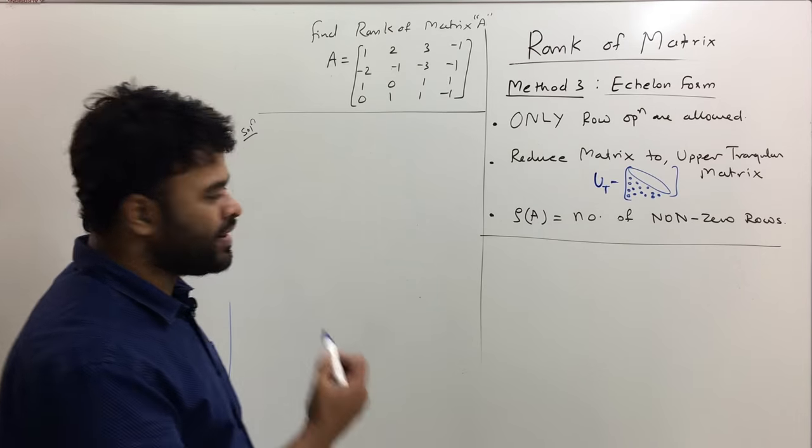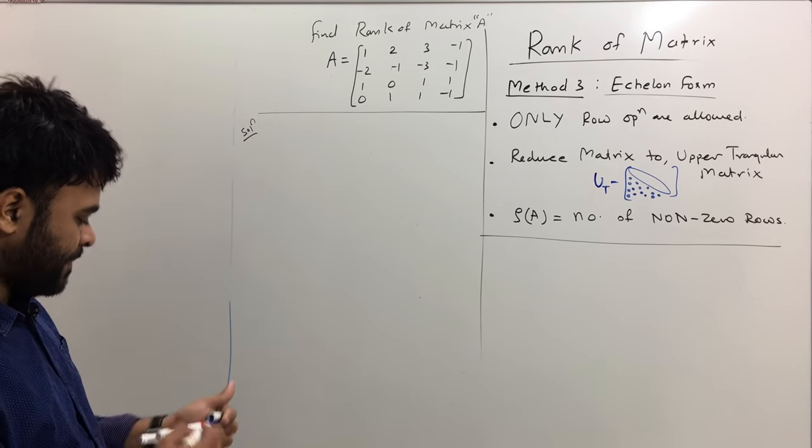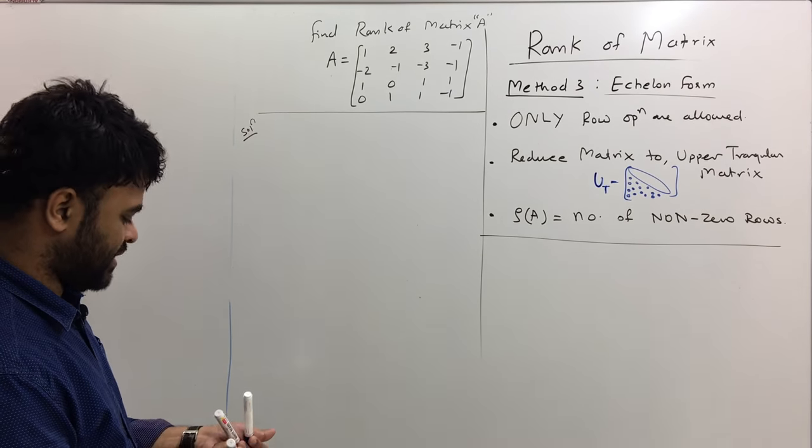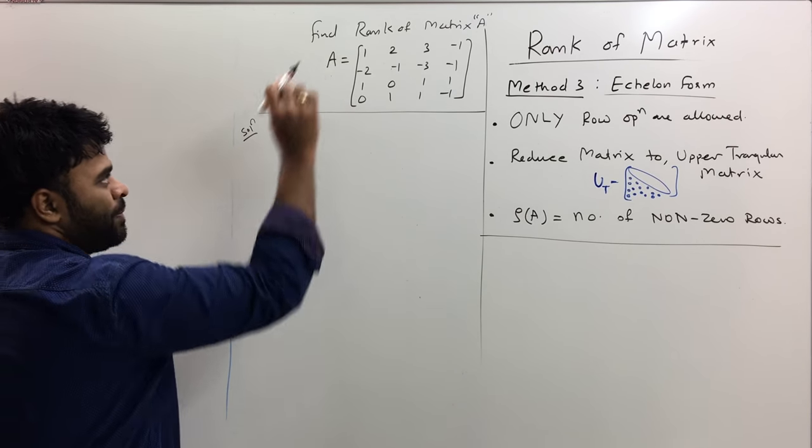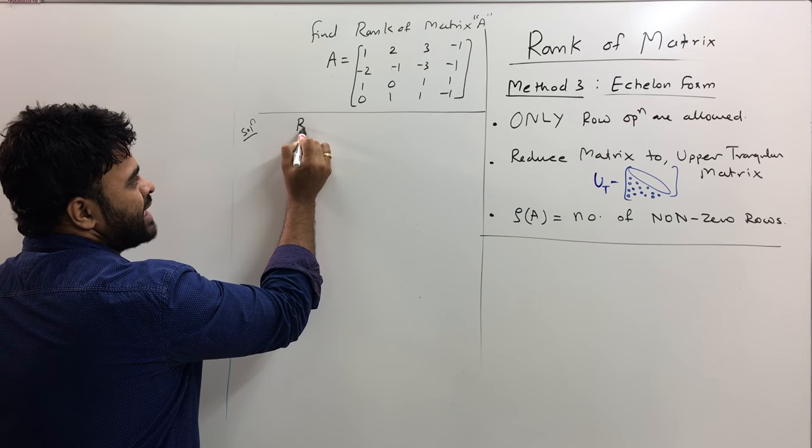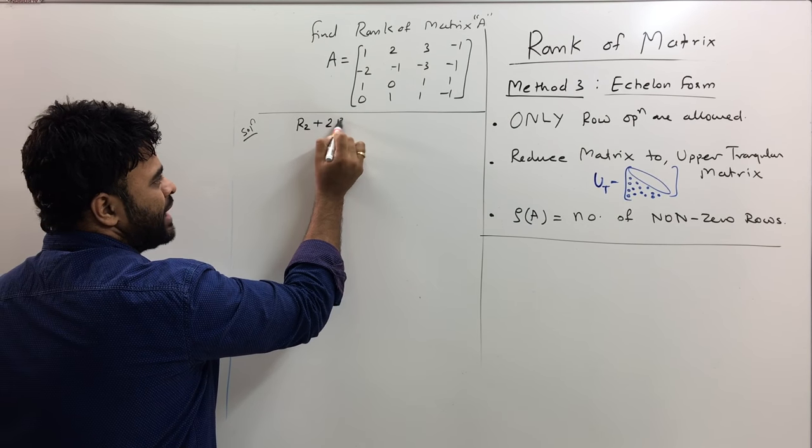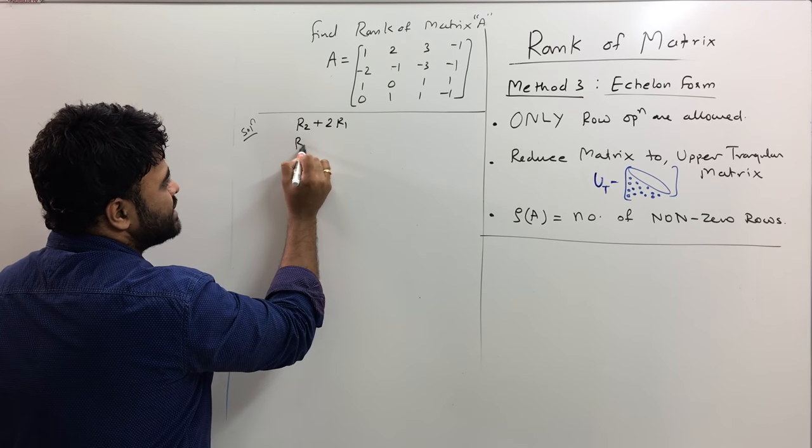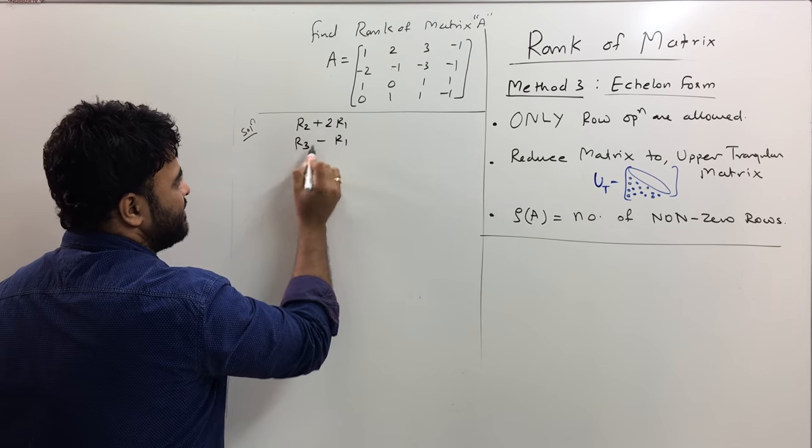Let's solve this question and you will understand things better. Let's reduce the matrix A. No column operation, only row operations are allowed. The first operation I will perform here is R2 plus 2 times R1. I will double this one and add it here.